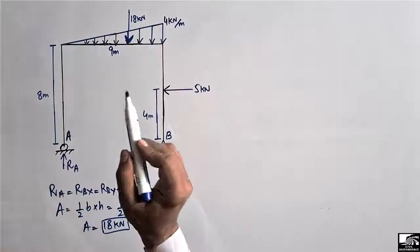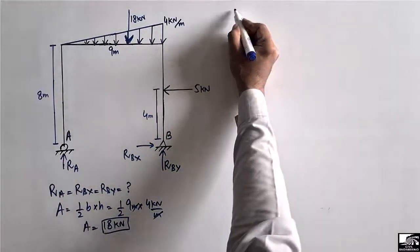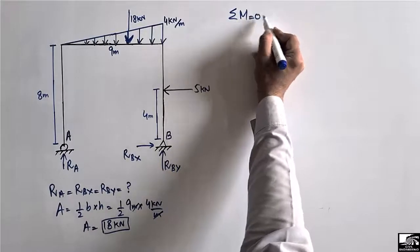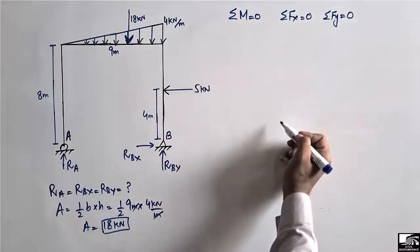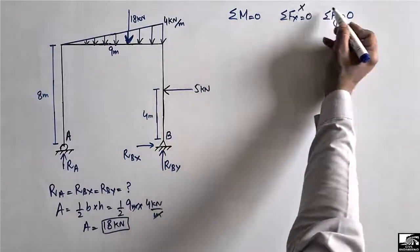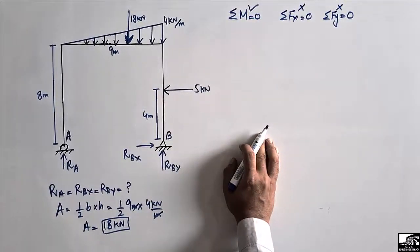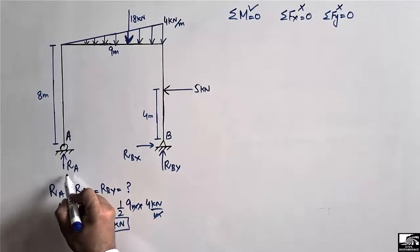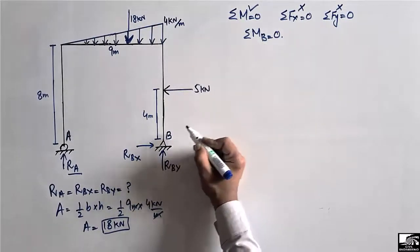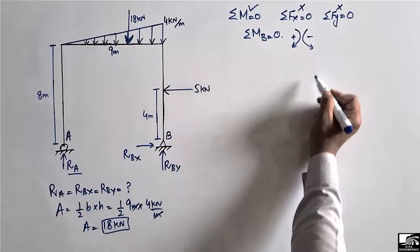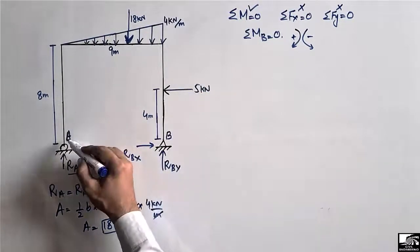The 18 kilonewton load acts at the centroid of the triangle. To find the support reactions we use: summation of moments equal to zero, summation of horizontal forces equal to zero, and summation of vertical forces equal to zero. We have three unknowns, so to find Ra we take the summation of moments at point B equal to zero, with clockwise moments taken as positive and anti-clockwise as negative.